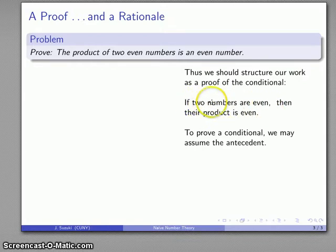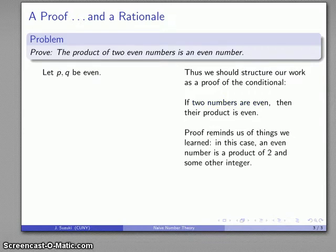We can always assume that we have two numbers that are even. So I'll start off with two numbers that are even: let p and q be even numbers. Part of the value of proof is it reminds us of things that we've learned. In this particular case, what does that mean? We might remember that an even number is a product of 2 with some other integer.